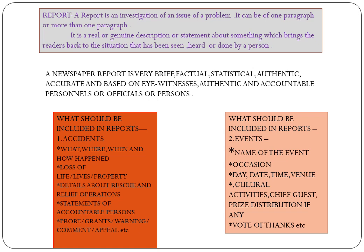What should be included in reports? Reports में क्या-क्या चीज़ें समाहित की जाती हैं? अगर हम किसी accident का वर्णन कर रहे हैं, तो हमें बताना पड़ेगा: what, where, when and how happened। वो accident क्या था, कहाँ पर था, कब हुआ और कैसे घटित हुआ। Loss of life, life and property — किस तरीके से जीवन और property का नुकसान हुआ।